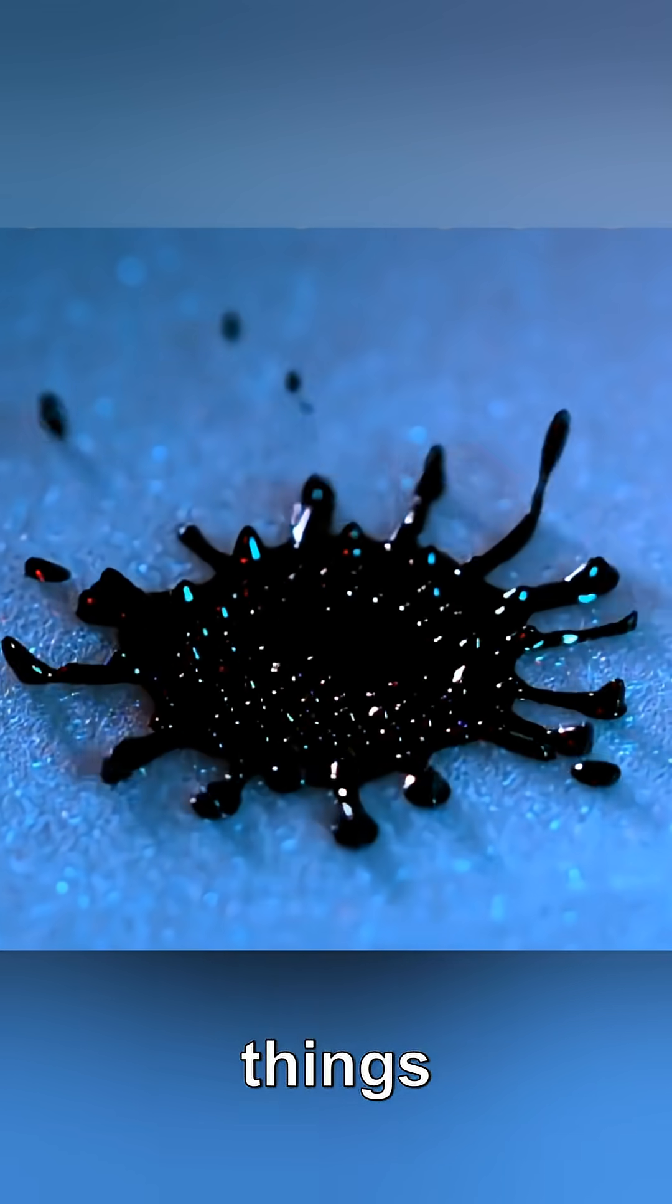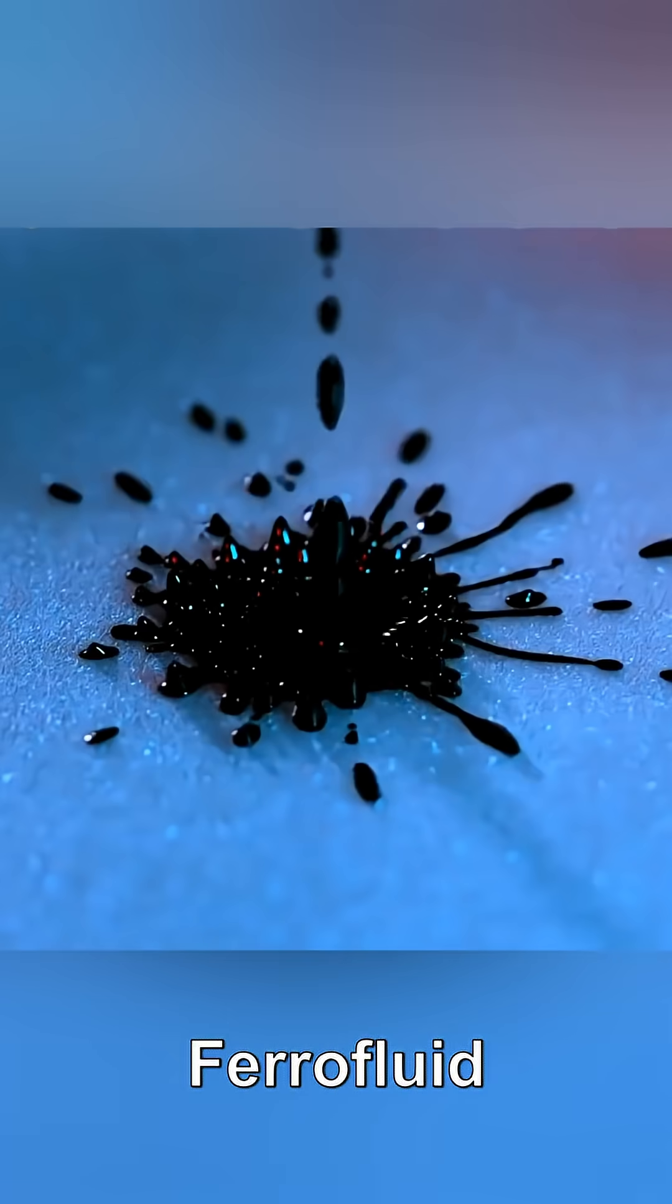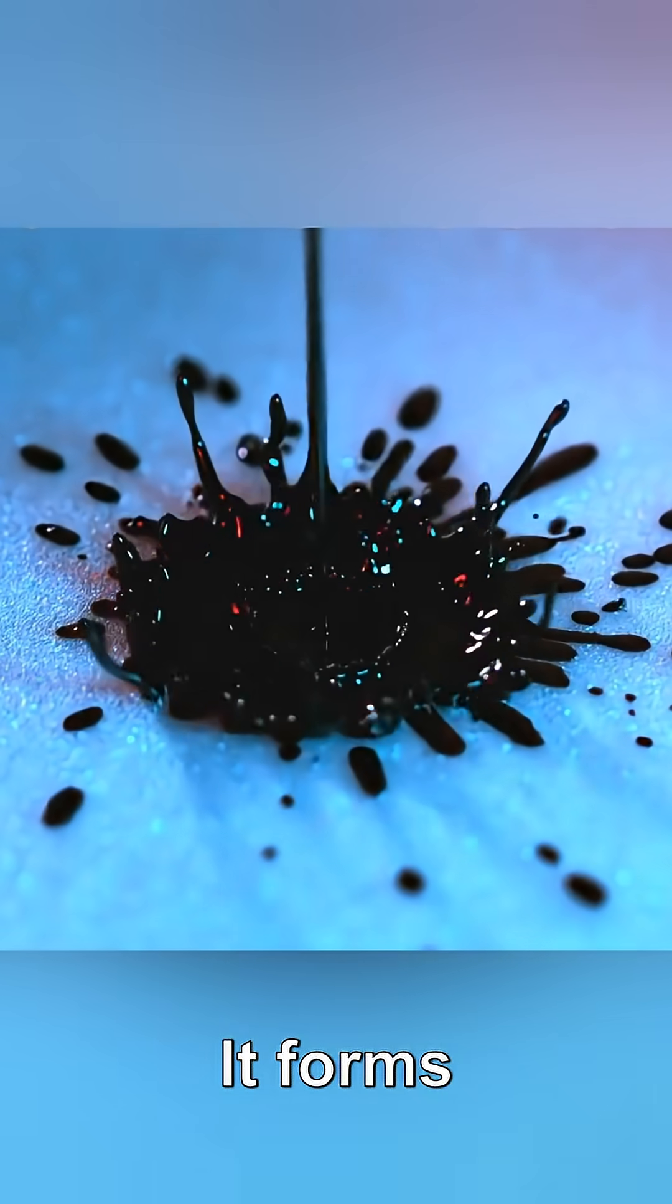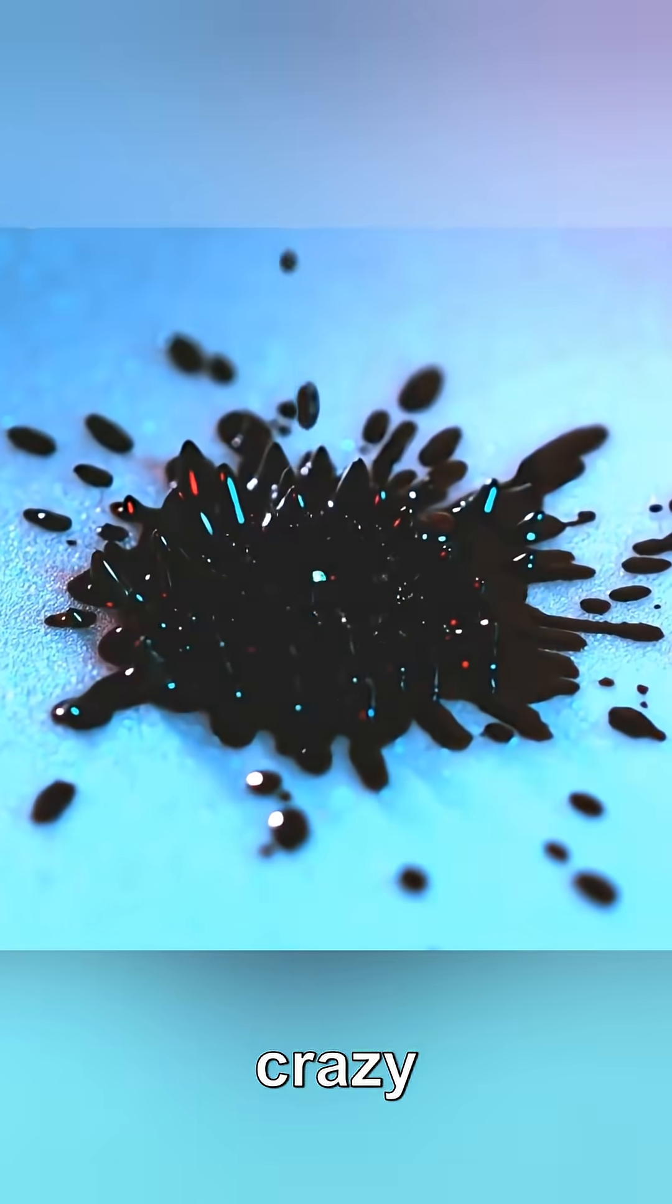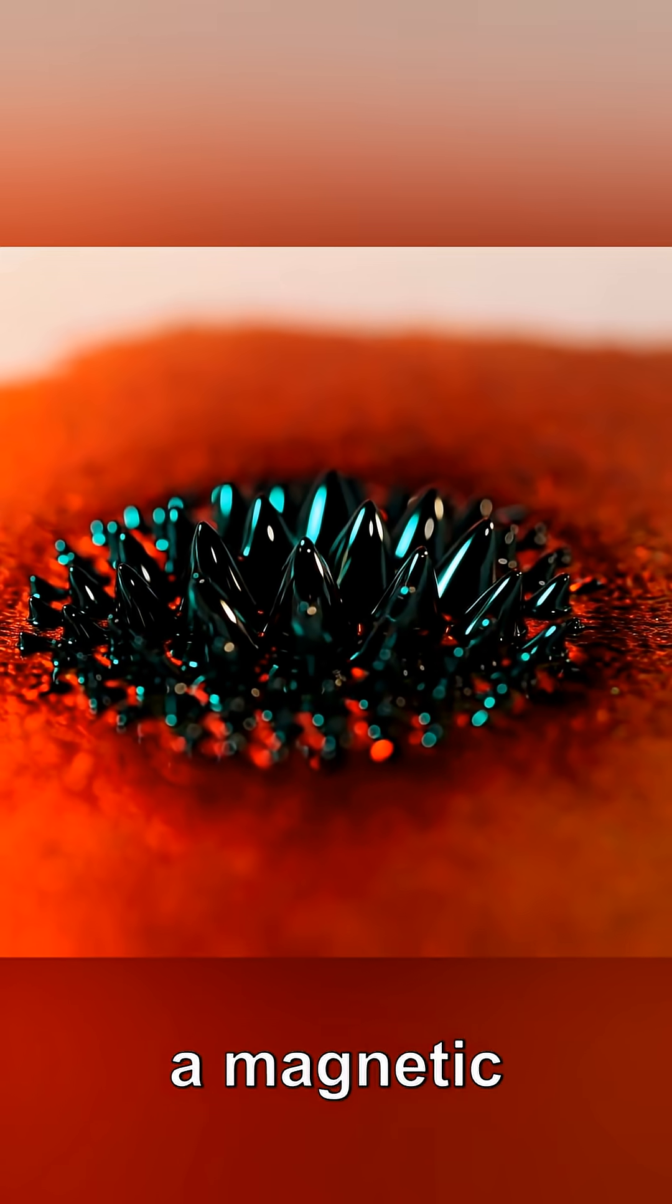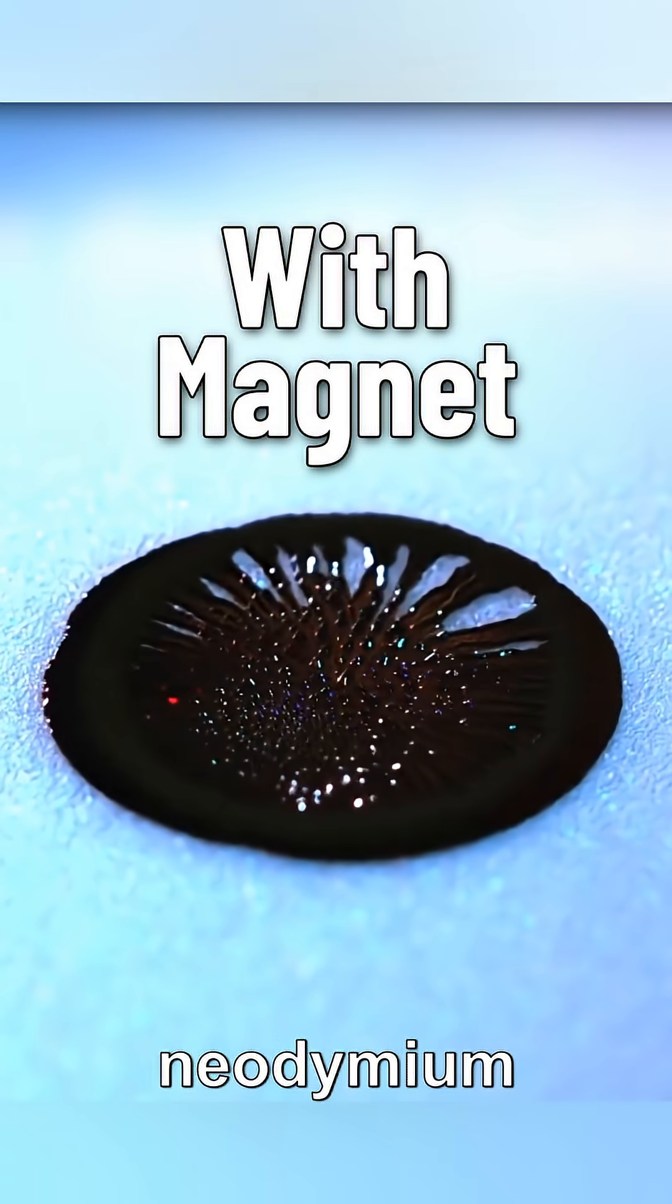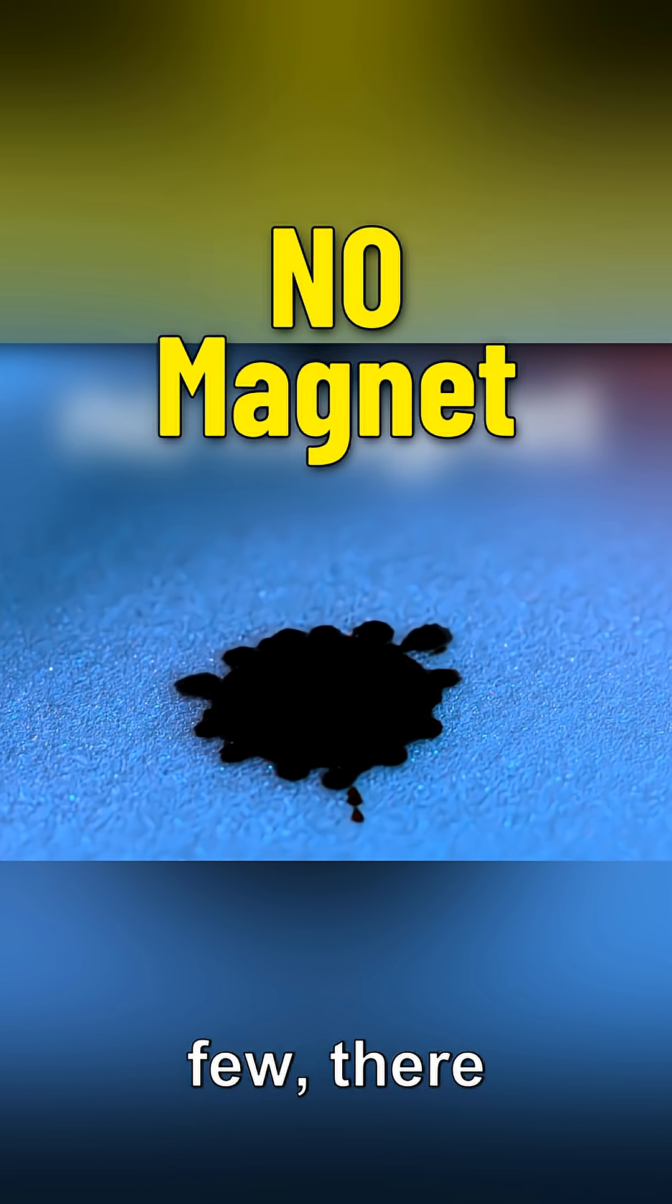I think that this is one of the coolest things we've ever filmed. Ferrofluid is an oily substance that sticks very strongly to magnets. It forms these unbelievably crazy spikes in the presence of a magnetic field and so I wanted to drop the ferrofluid onto a styrofoam plate, but in a few cases there was a strong neodymium magnet underneath the plate and in a few there wasn't.